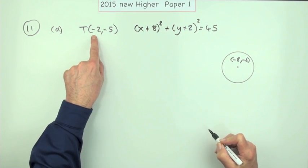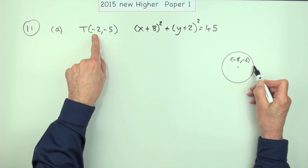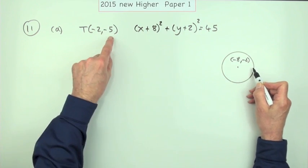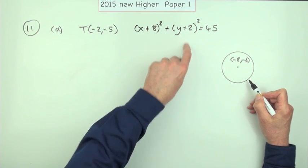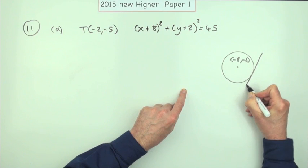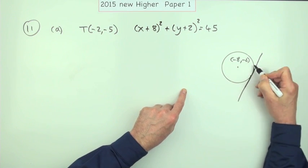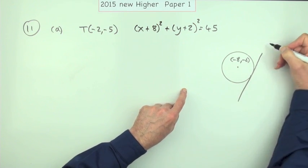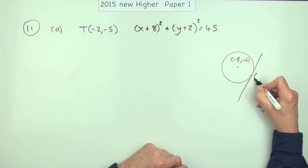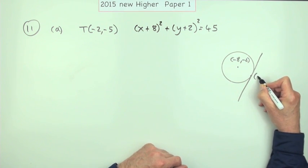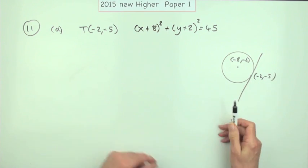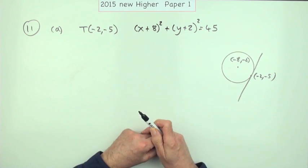So this point must be to the right of the centre — only 2 back rather than 8 back — and below it, 5 below compared to 2 below, so it's somewhere down here. Which means if it's in this quarter, the tangent must have an upward gradient. That's the point negative 2, negative 5. So the question is: what's the equation of this line?